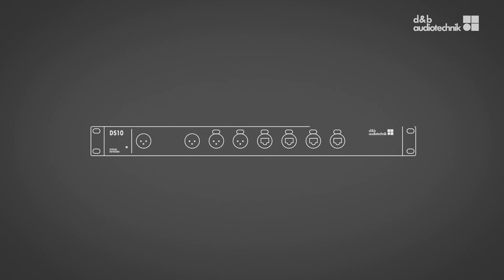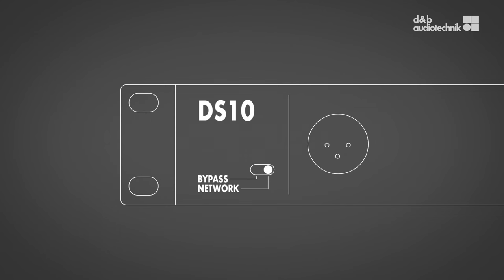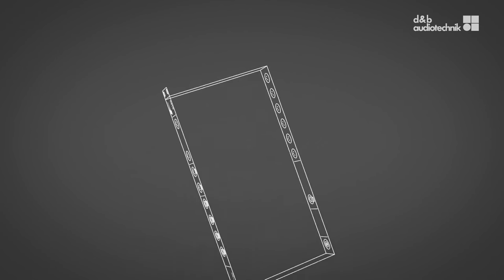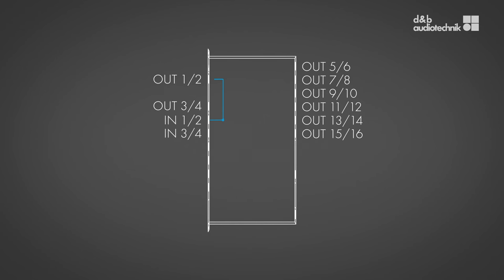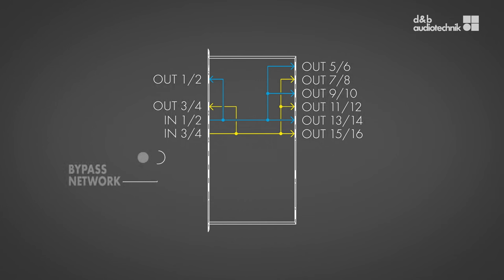Actually, the simplest way to use the DS10 has nothing to do with Dante at all. Setting the front panel switch to bypass lets the DS10 work as two independent, latency-free AES distribution amplifiers and a five-port gigabit network switch.